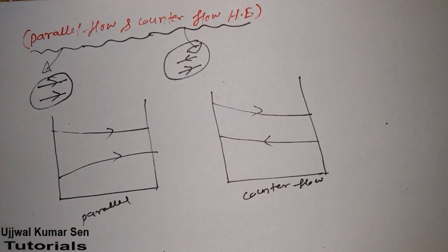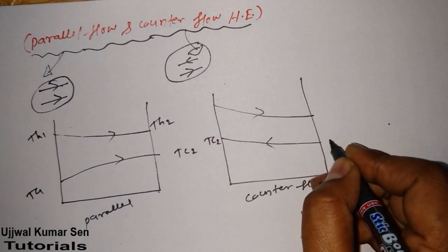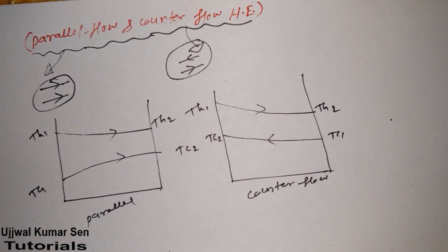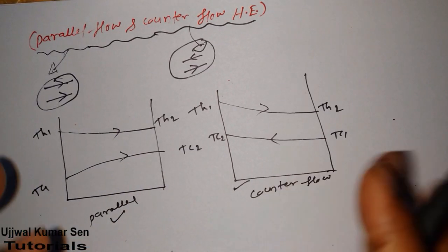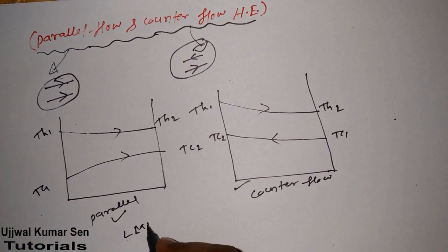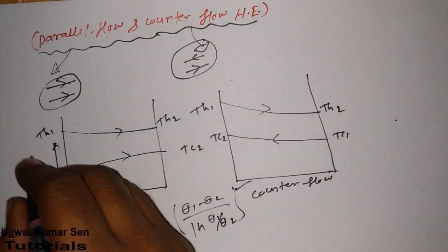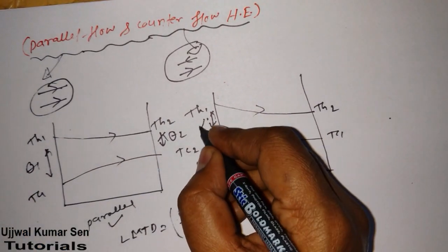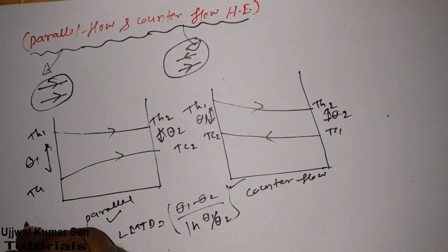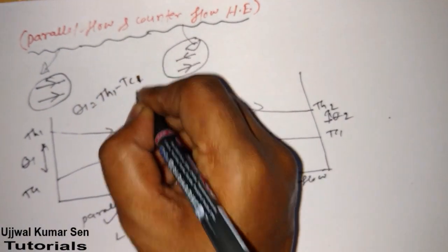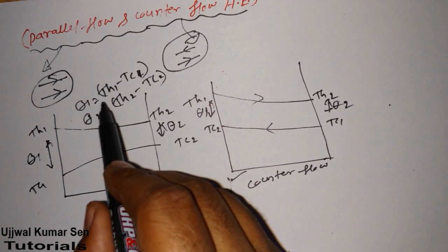For parallel flow: TH1, TH2, TC1, TC2 are labeled at the respective ends. Most of the time questions ask you to find LMTD. The LMTD formula is (θ1 − θ2) / ln(θ1 / θ2). For parallel flow: θ1 = TH1 − TC1 and θ2 = TH2 − TC2.